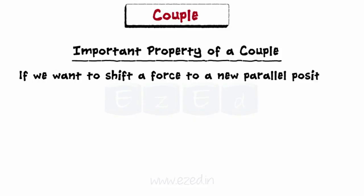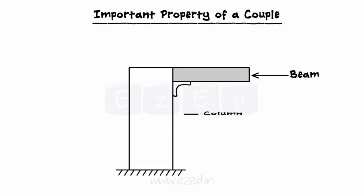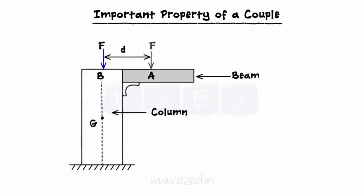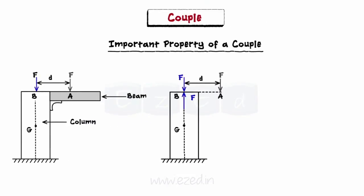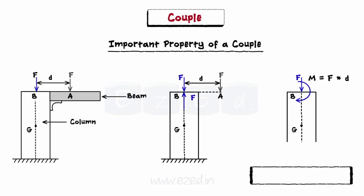If we want to shift a force to a new parallel position, a couple must be added to the system. For example, as shown in the figure, a beam is connected to a column. A force F is acting on the beam at point A. In order to understand its effect on the column, we must shift it from its original position at point A to a new position at B, that is, on the centroidal axis of the column. This can be done by adding two collinear forces of same magnitude F and minus F at point B. The two parallel forces, F at point A and minus F at point B, form a couple. Thus, we have a single force F at point B, and a couple M equal to F into D in the system. Such a system is called a force-couple system.